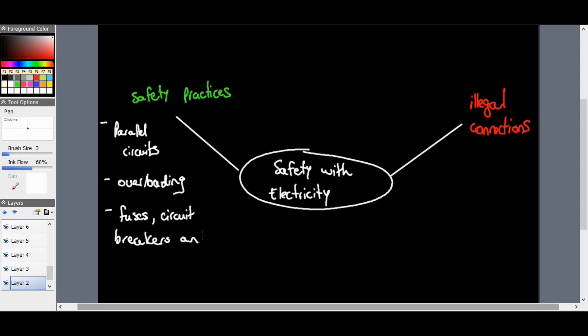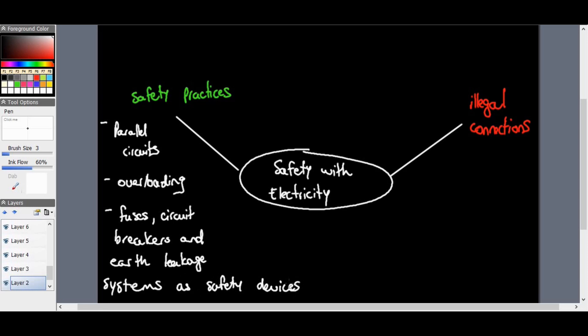We'll also have a look at earth leakage systems as safety devices, as well as illegal connections. So we'll look at what different fuses, circuit breakers, and earth leakage systems are, and how they're used with regard to safety with electricity. But let's start with the first one: parallel circuits.